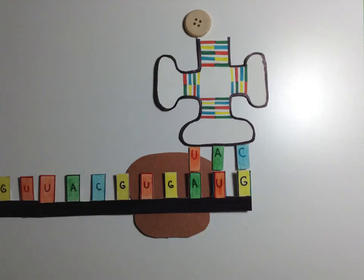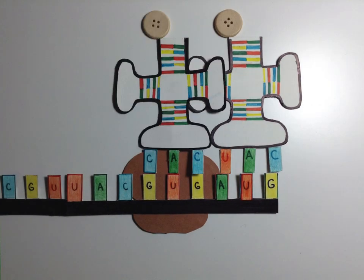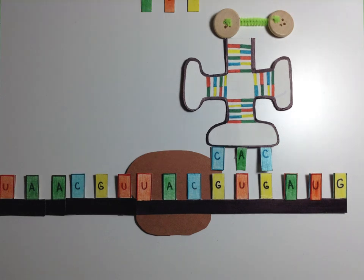As the triplet is read, the tRNA delivers the corresponding amino acid. This process is repeated multiple times and a polypeptide is formed.